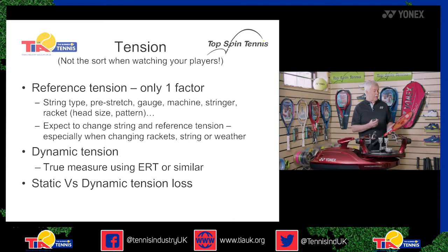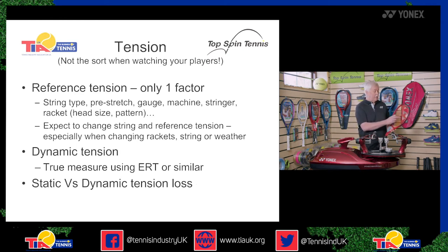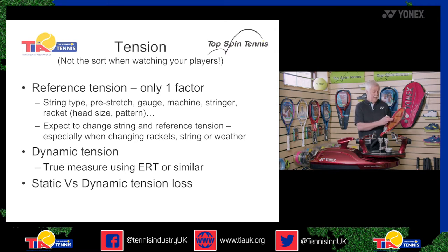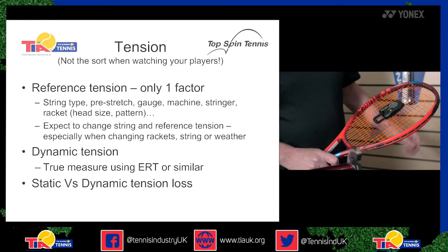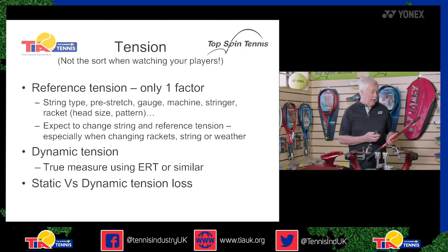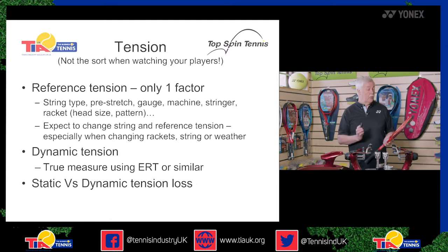The correct way of assessing all of this is something called dynamic tension, or DT — effectively how tight the strings are in the centre of the string bed. All of those factors I mentioned affect it. It's not easy to measure; you need a little device that clips onto the strings to measure the DT. More and more professional players are now wanting their strings strung to a specific dynamic tension.